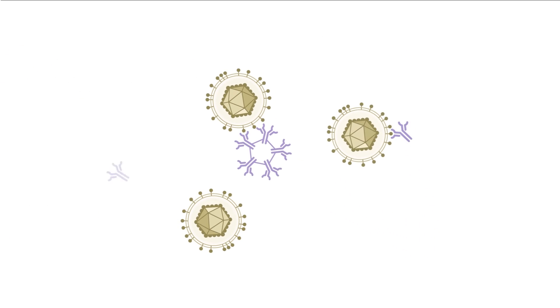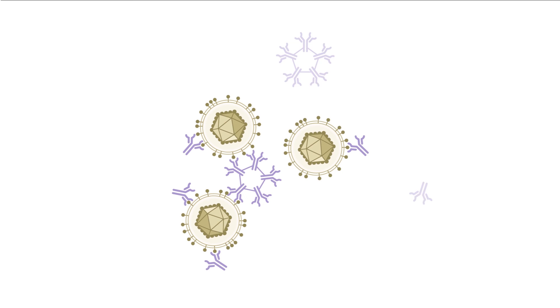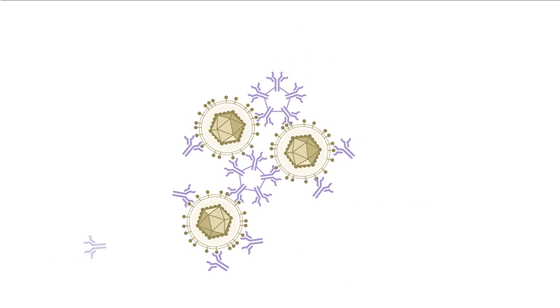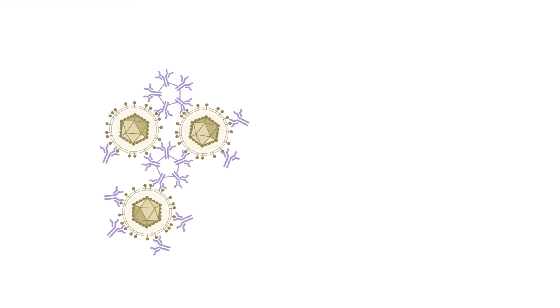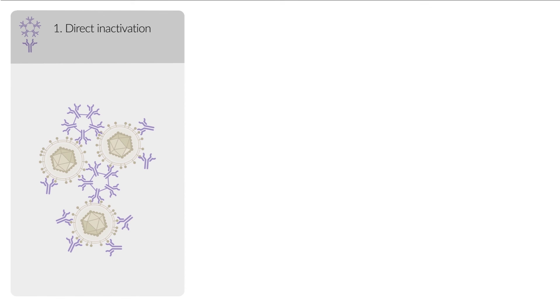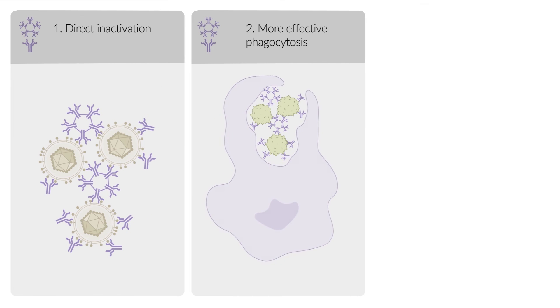The antibodies now bind to the invading pathogen. The final stage of the adaptive immune response comprises three parts. First, antibody binding can render the pathogen harmless. Second, this binding results in more efficient phagocytosis through opsonization.